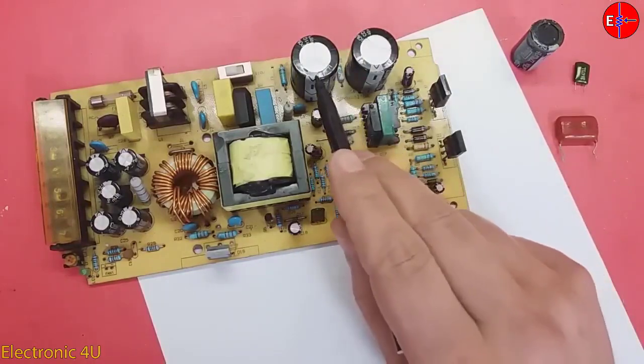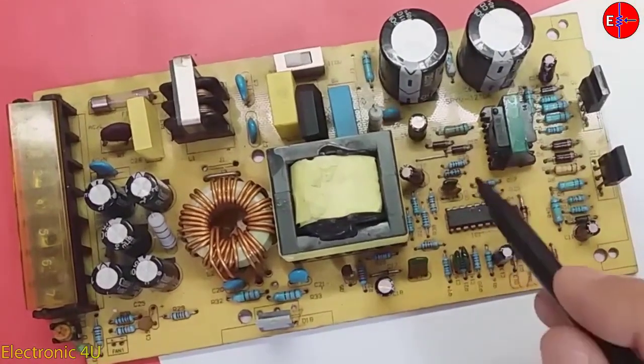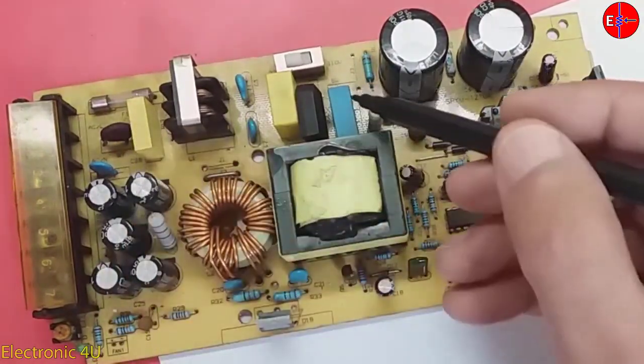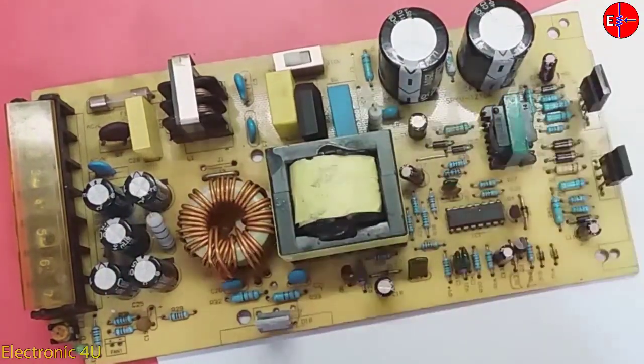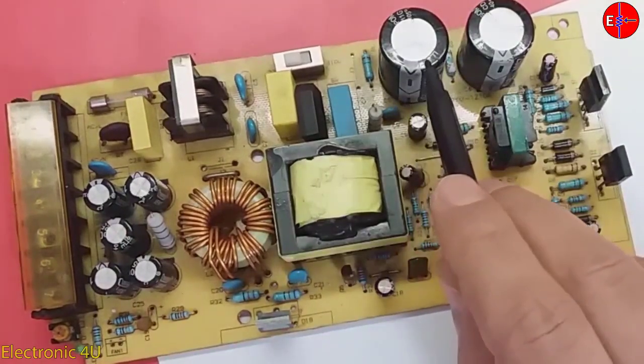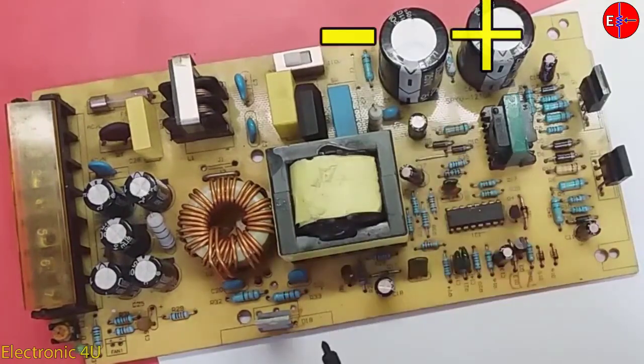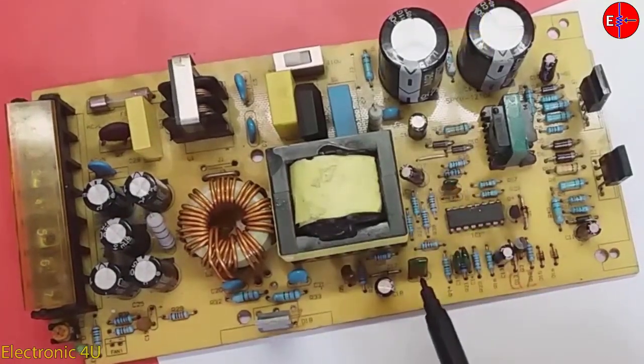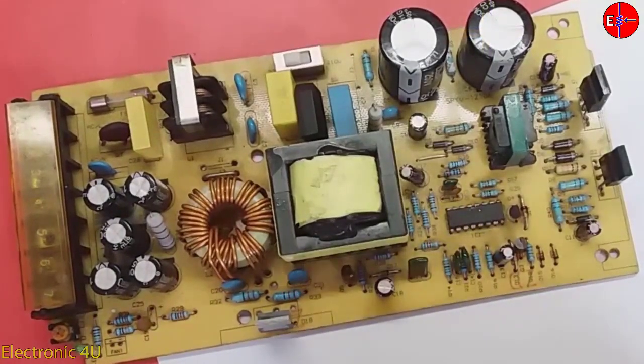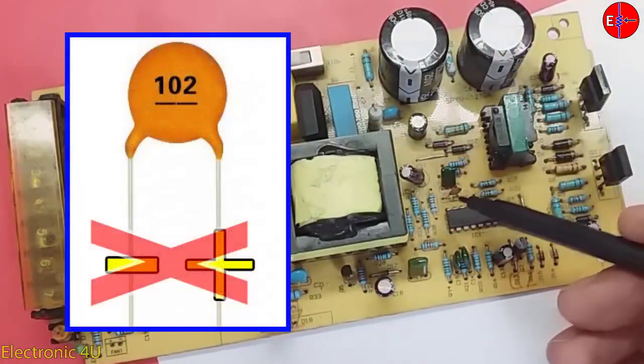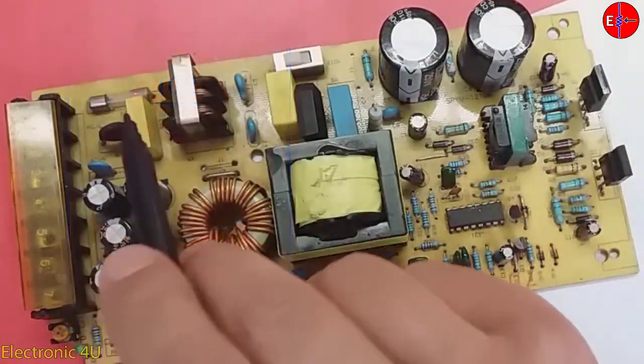What is a capacitor? This is the capacitor. These yellow pieces are also capacitors. This blue piece is also a capacitor. There are electrolyte capacitors that have positive and negative poles. Ceramic capacitors do not have poles.